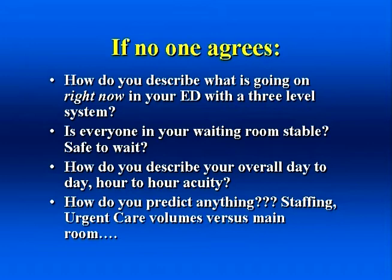Does this mean the triage nurses were not good? No. It means that they were using a very poor triage system. It is our job as emergency leaders to give triage nurses the best tools that we can to enable them to do their job well. How could they possibly have good inter-rater reliability when three-level systems do not have definitions, guidelines, or rules? We can do better. So, in closing, using a three-level system, you cannot reliably describe what is going on in your waiting room right now.